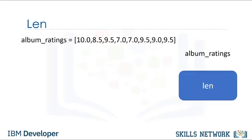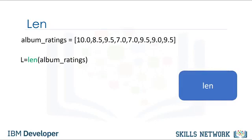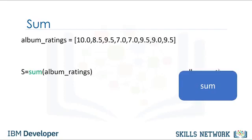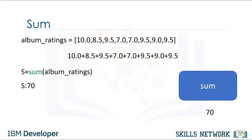Consider the following list. The len function takes this list as an argument, and we assign the result to the variable L. The function determines there are 8 items in the list, then returns the length of the list — in this case, 8. The function sum takes in an iterable, like a tuple or list, and returns the total of all the elements. We pass the list into the sum function and assign the result to the variable s. The function determines the total of all the elements and returns it — in this case, the value is 70.